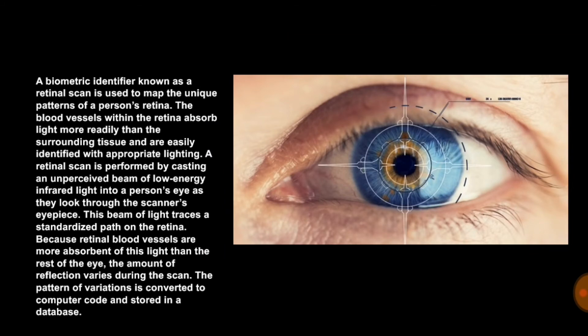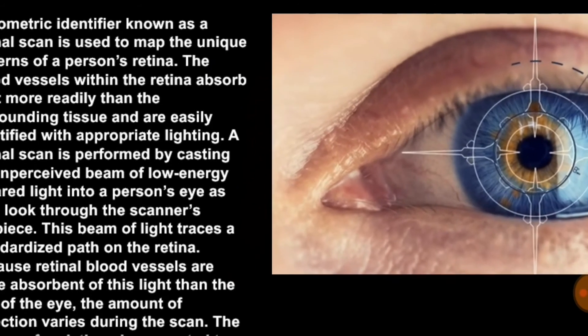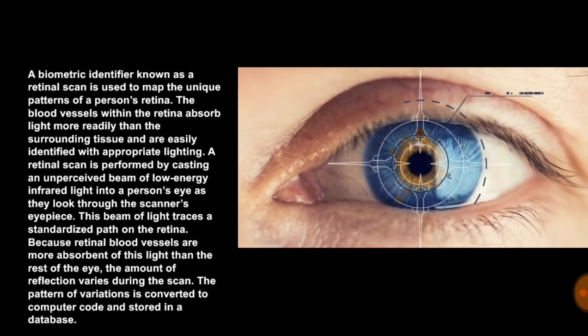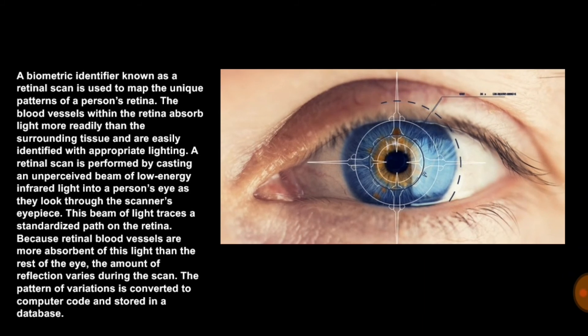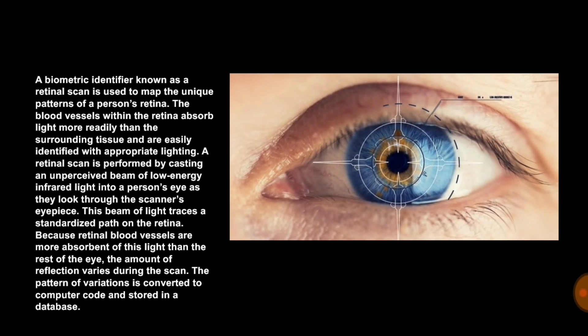A retinal scan is performed by casting an unperceived beam of low-energy infrared light into a person's eye as they look through the scanner's eyepiece. This beam of light traces a standardized path on the retina. Because the retinal blood vessels are more absorbent of this light than the rest of the eye, the amount of reflection varies during the scan, and the pattern of variations is converted to computer code and stored in a database.